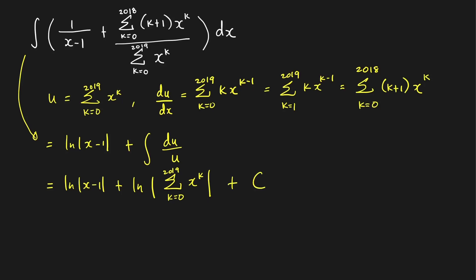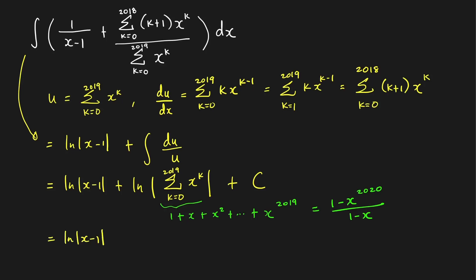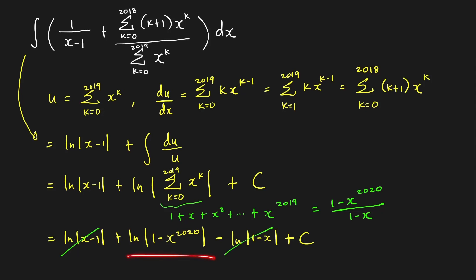Looking at the summation: it equals 1 + x + x² + … + x^2019, which is a geometric series. Using properties of logarithms, we combine ln|x−1| + ln|u| = ln|1 − x^2020| − ln|1 − x|, and since ln|x−1| = ln|1−x|, those two terms cancel. The final answer is ln|1 − x^2020| + C.